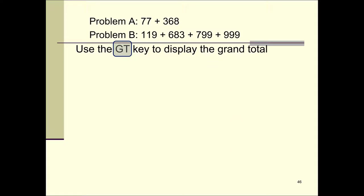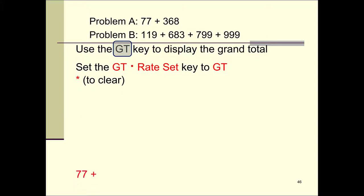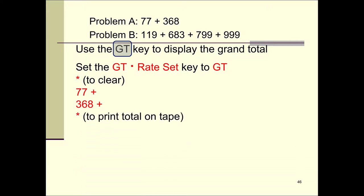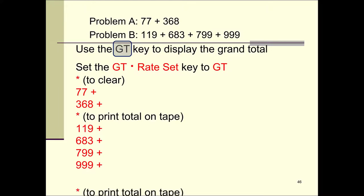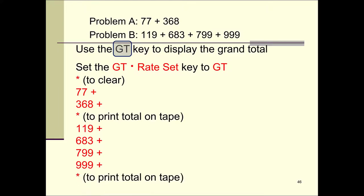Let's do these two problems and calculate the grand total. Make sure your GT/rate-set switch is set to GT. Start by clearing, then enter 77 plus 368 plus — we're done with that addition problem, so hit asterisk to print the total on your tape. Then start problem B: 119 plus 683 plus 799 plus 999 plus — we're done, so hit asterisk again. Now hit your GT key to find the grand total of those two problems.